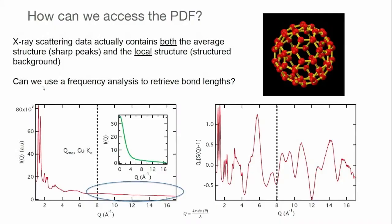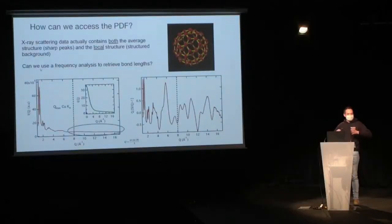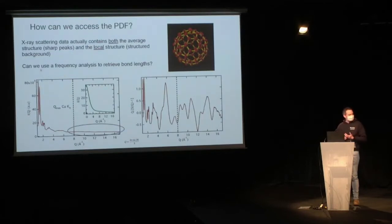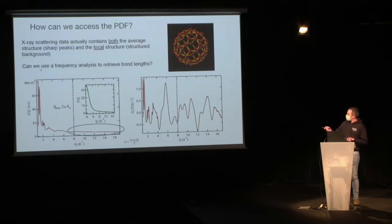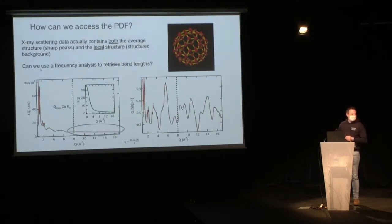This is an example of something which is really disordered at room temperature — if your graduate student collected this data set, you'd say this is rubbish, make a better sample. This is C60, Buckminster Fullerene. These molecules are very well-defined, but at room temperature they're all rotating on a picosecond timescale, and you don't really have a crystal. The question is: if we collect all the X-ray scattering from this sample, can we use some kind of analysis to see what the real distances are? What we're going to do is a frequency analysis — I've mathematically treated this data, dividing out a smooth function called the form factor to normalize it to oscillate around zero. You can see this oscillation is completely unanalyzable by standard crystallographic techniques.